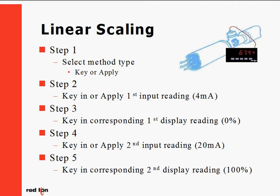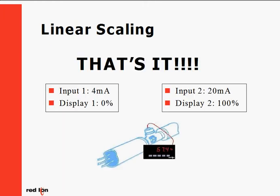In step 4, we keyin or apply our high point input value. In our example, we would enter 20 milliamps. The final step has us keyin the appropriate display value corresponding to our high point display value. In our example, that is 100 percent. Scaling is now complete — no math calculations. All we need to perform linear scaling is four values: low and high input values, and low and high display values.